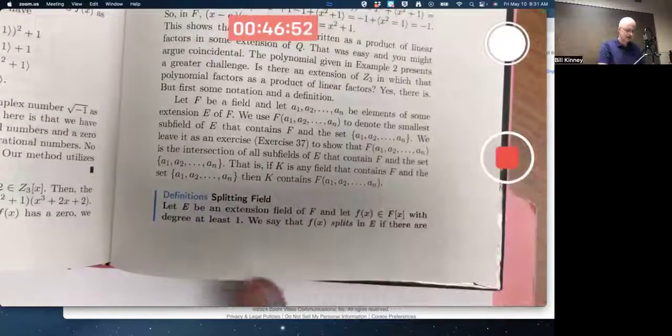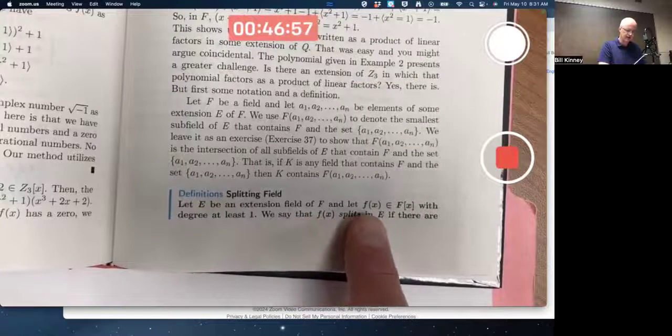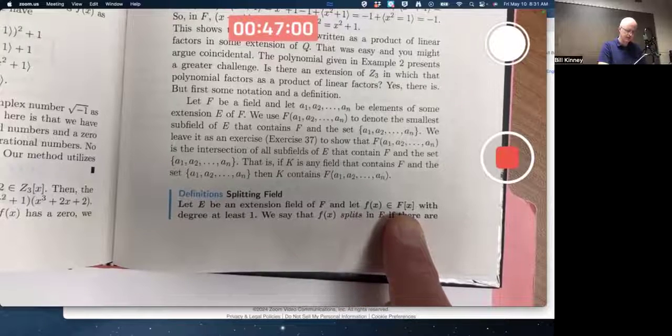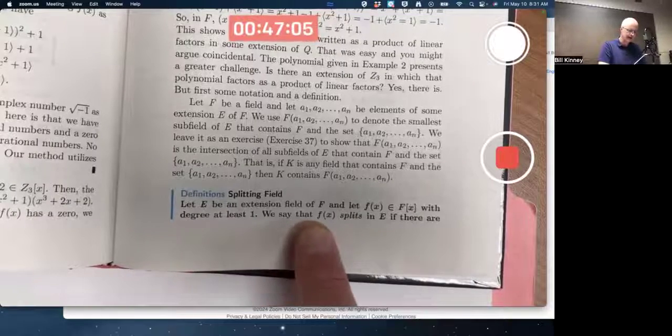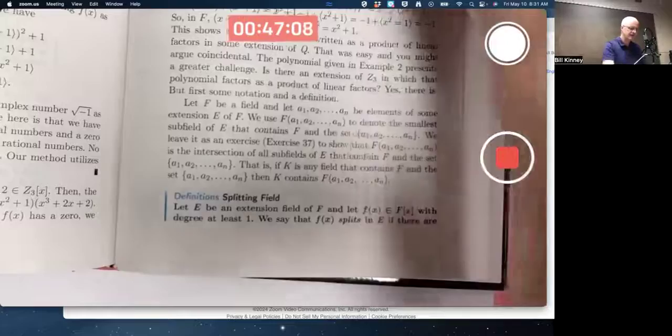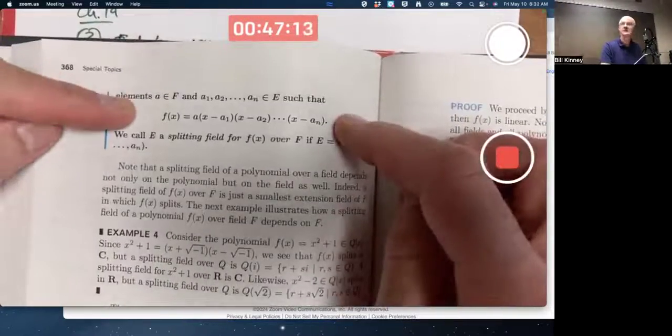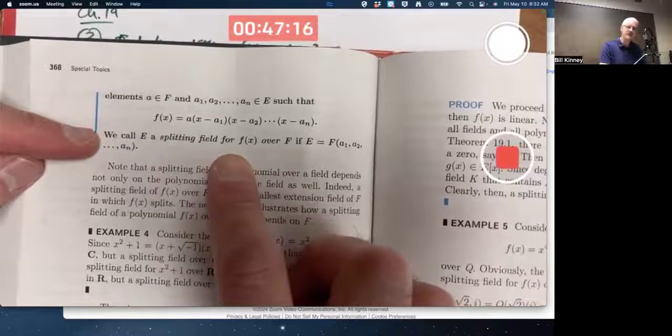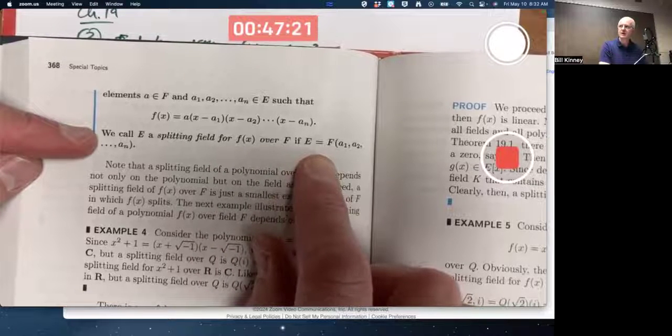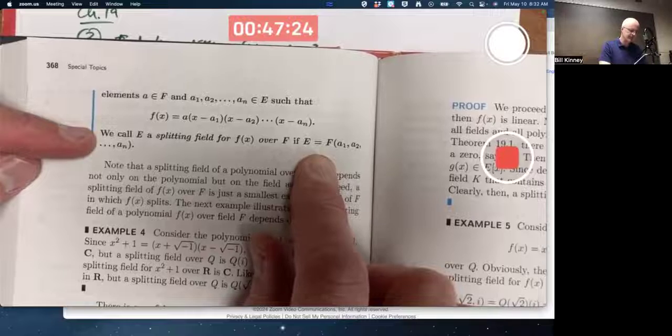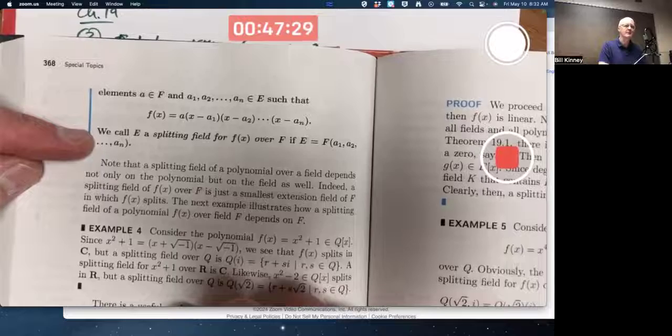Let E be an extension field of F, and let f(x) be a polynomial with coefficients in capital F, the smaller field, with degree at least 1. We say f(x) splits in the bigger field if you can completely factor it. But what's the definition of a splitting field? It's essentially the smallest extension of F in which you can completely factor, which you can always obtain by adjoining all those roots, a1 through an, using the adjoin notation.